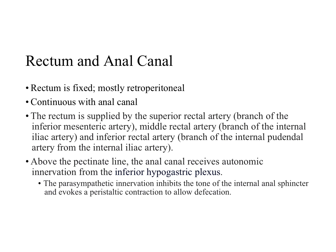Above the pectinate line, the anal canal receives autonomic innervation from the inferior hypogastric plexus. The pectinate line defines the superior two-thirds of the anal canal from the inferior one-third. It's a visible zigzagging line formed from the inferior aspect of longitudinal folds known as the anal columns or anal valves. Parasympathetic innervation inhibits the tone of the internal anal sphincter to allow defecation to occur, and evokes a peristaltic contraction that allows defecation.